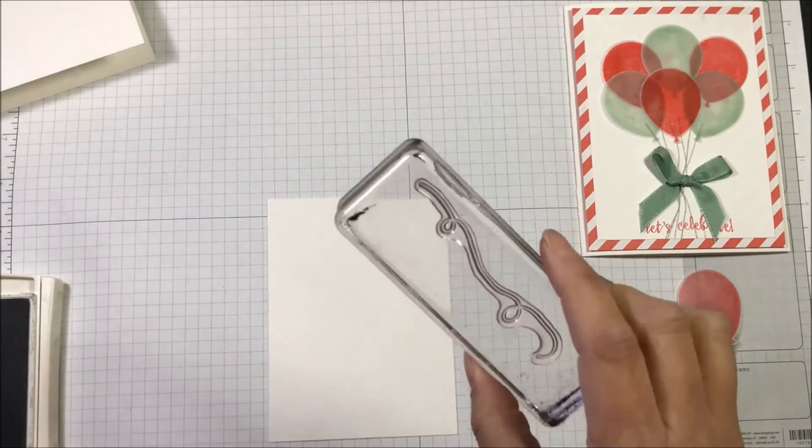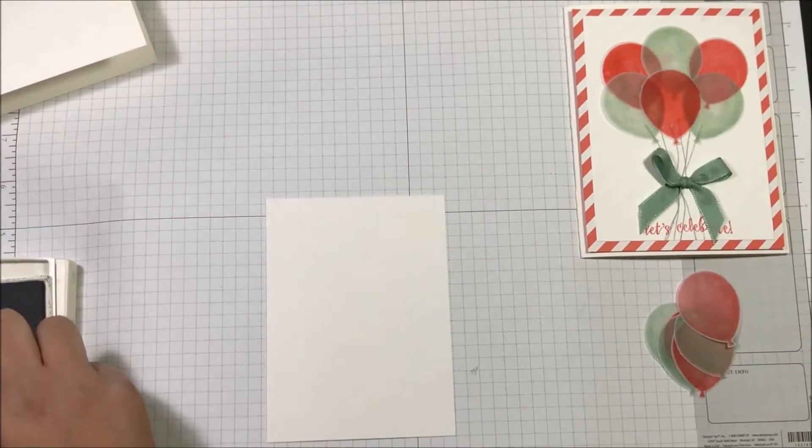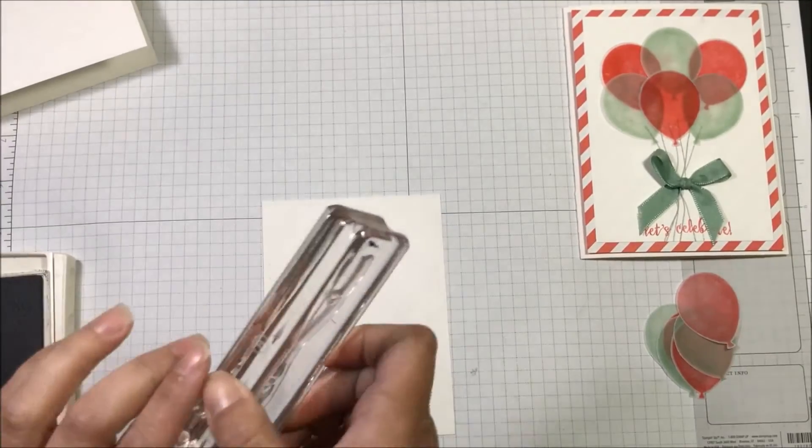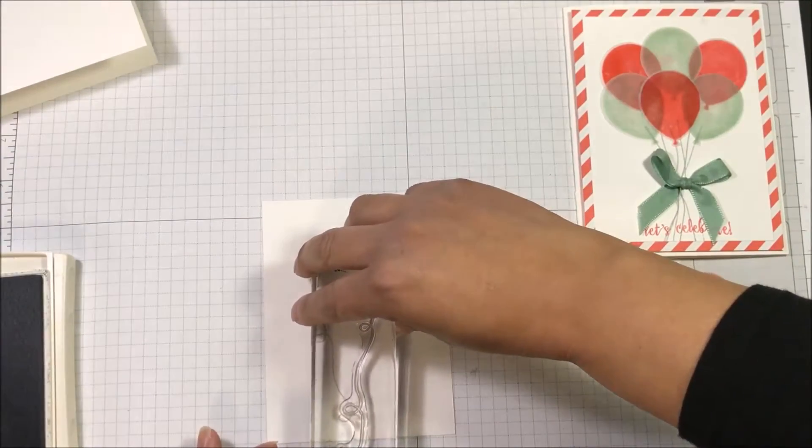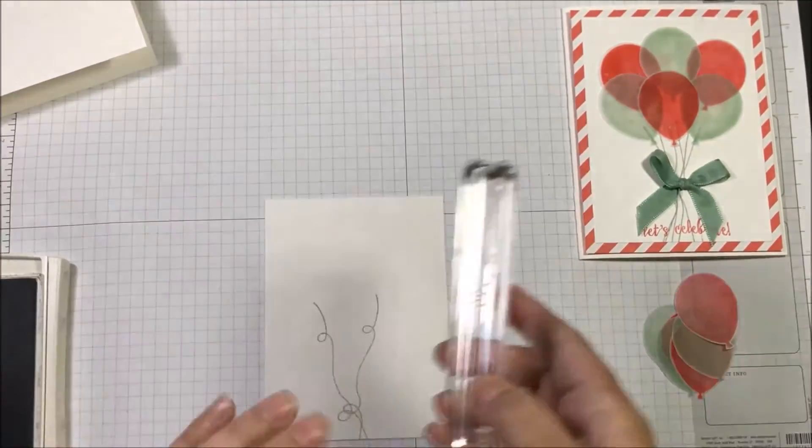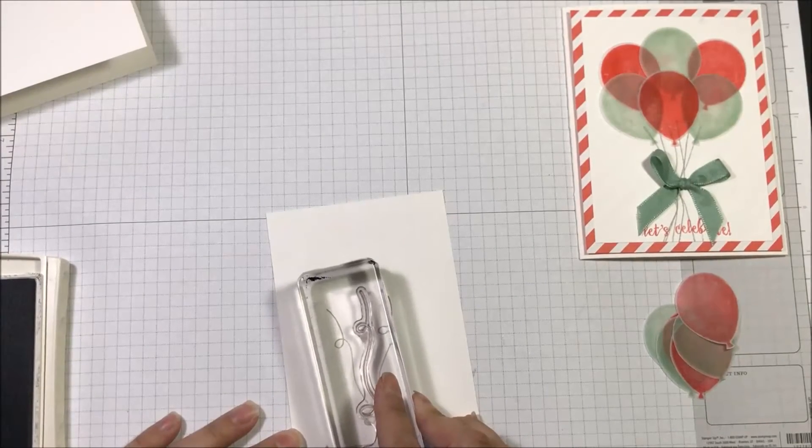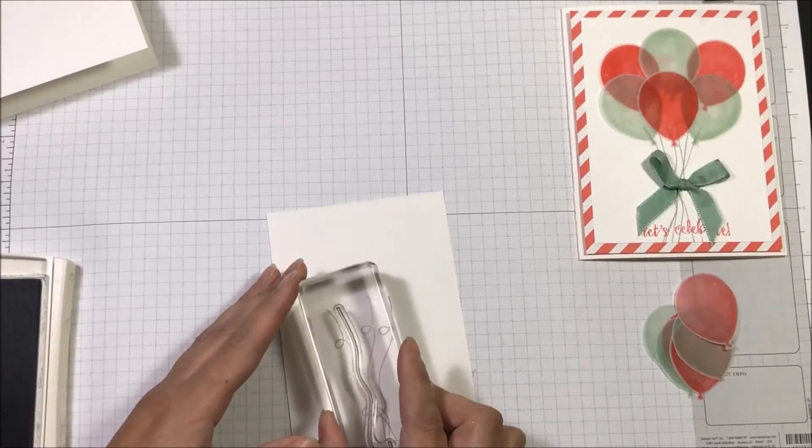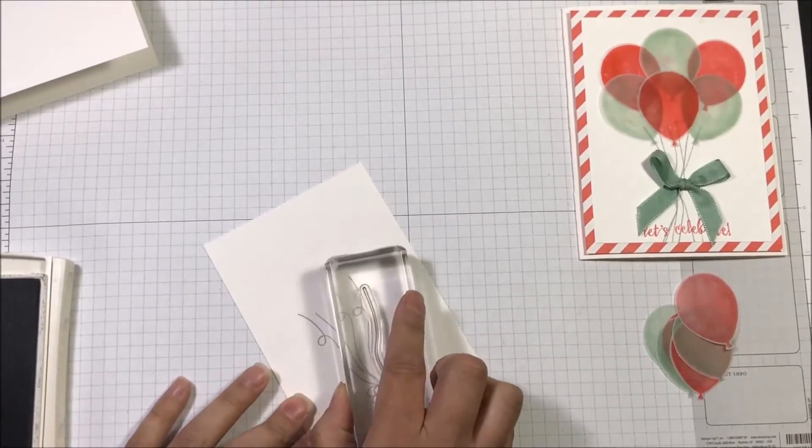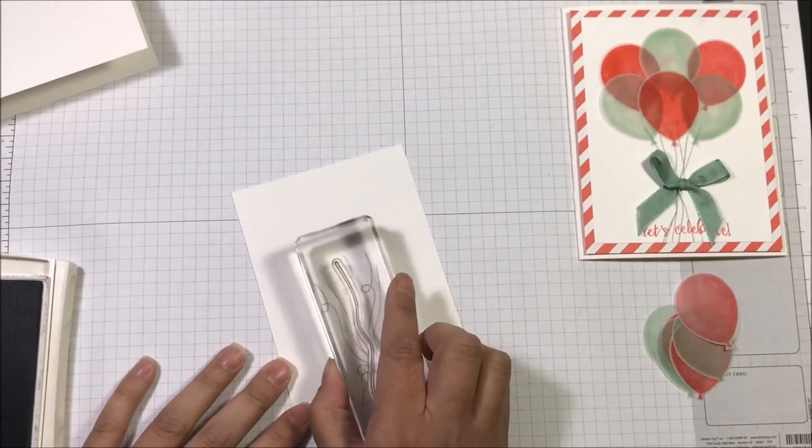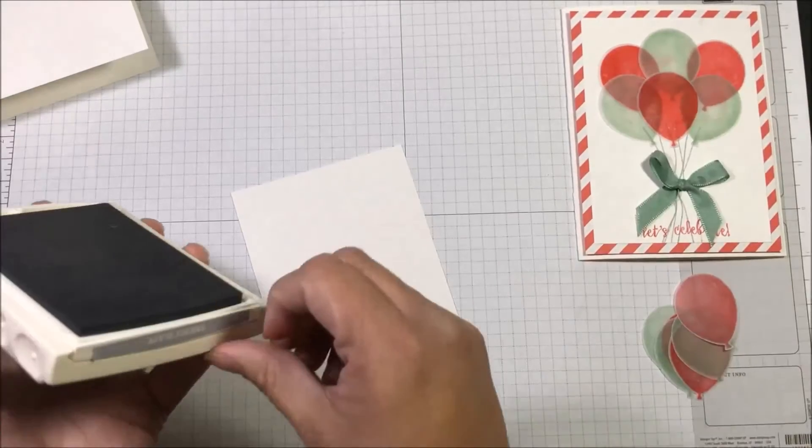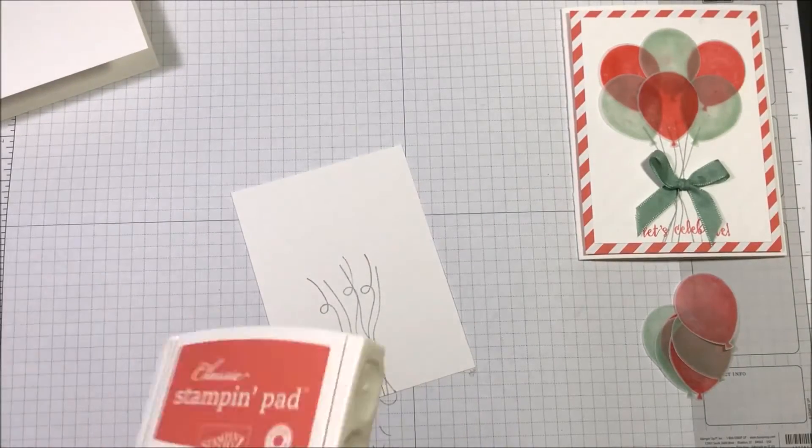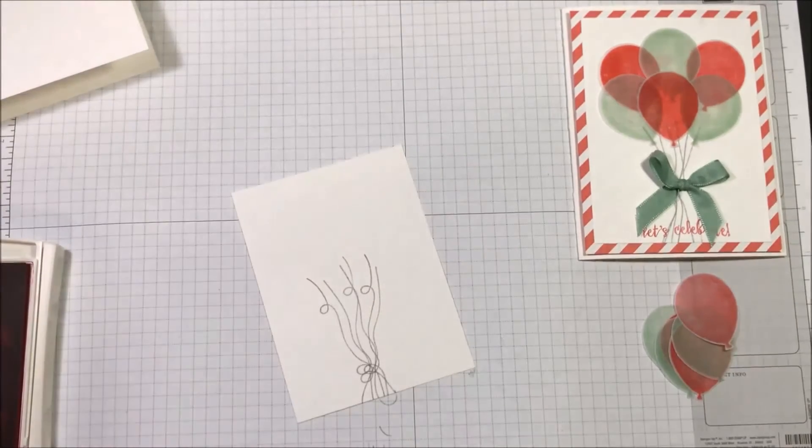Okay. So now I'm going to add some of these strings here and I'm using smoky slate because I didn't want something real dark and I'm just going to kind of make them all meet in the middle here. I need six strings because there is six balloons. The other thing I'm going to do is I'm going to stamp my sentiment, which I stamped right over my little strings there. And it just says, let's celebrate because I am in a celebrating mood.